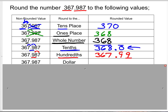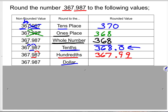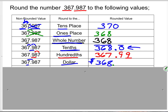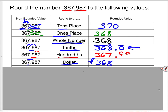Rounding to the nearest dollar means rounding to the ones place. Nine tells seven to round up to eight; six and three stay the same. When working with dollars, you can include the tenths and hundredths zeros, but make sure you include both zeros or none at all — that's important when working with money.